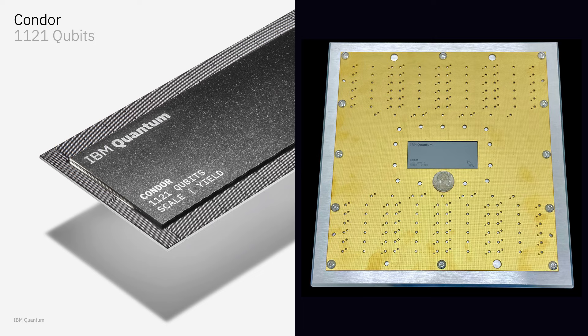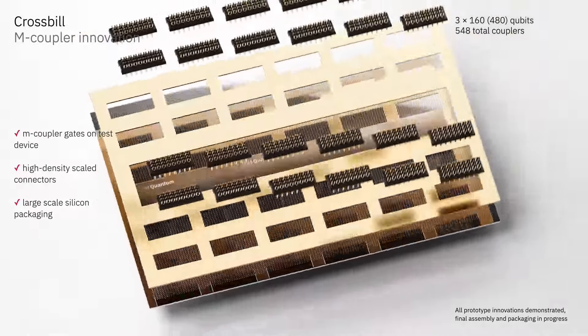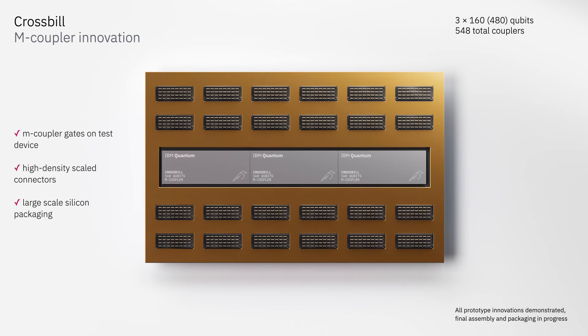Last year we introduced Condor — an experiment in scaling and yield in a monolithic sense, with 1,121 qubits. The chip was about the size of a business card and the package the size of a coffee table book. It pushed the limits of monolithic scaling, but we know that type of scaling has an ultimate limit. That's why we're introducing our latest innovations with M couplers in Crossbill — interconnects between chips, connecting three 160-qubit chips into a single package for a total of 480 qubits. Including all tunable couplers, this architecture has over 1,000 total quantum elements — the same complexity as Condor but built in a modular fashion.